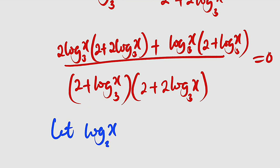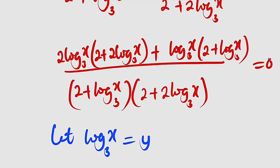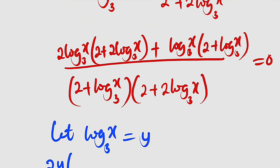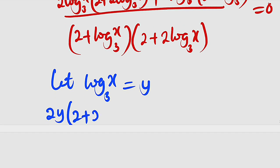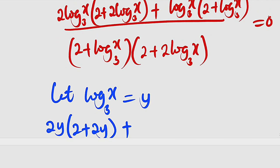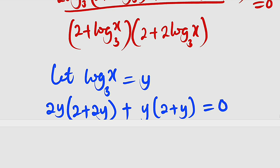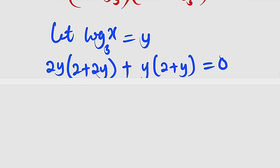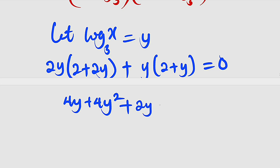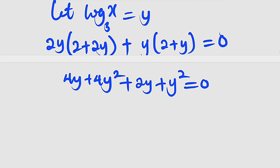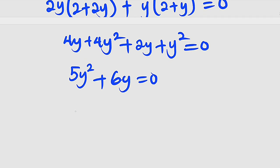Let y = log₃x. Substituting: 2y(2 + 2y) + y(2 + y) = 0. Expanding: 4y + 4y² + 2y + y² = 0. Collecting like terms: 5y² + 6y = 0.